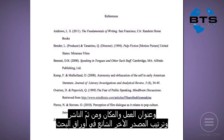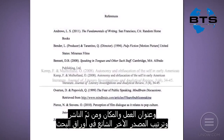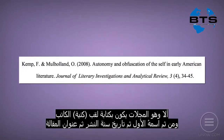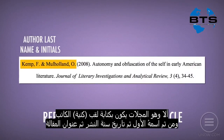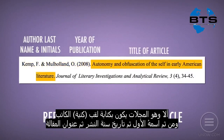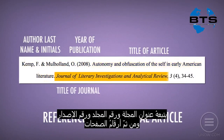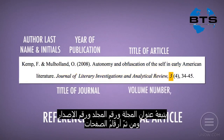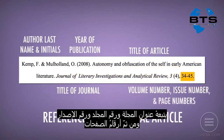Another common source for research papers is a journal article. The format includes: last names and initials of authors, year of publication, title of article, title of journal, volume number, issue number, and pages.